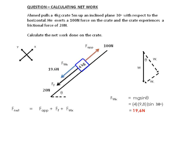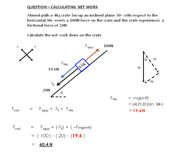F_net equals the applied force plus the frictional force plus the force of gravity. Looking at our diagram, the applied force is up the slope and both the gravitational force and frictional force are down the slope. So we write: F_applied minus F_friction minus mg sinθ, which gives us 100 minus 20 minus 19.6 newtons — a net force of 60.4 newtons up the slope.